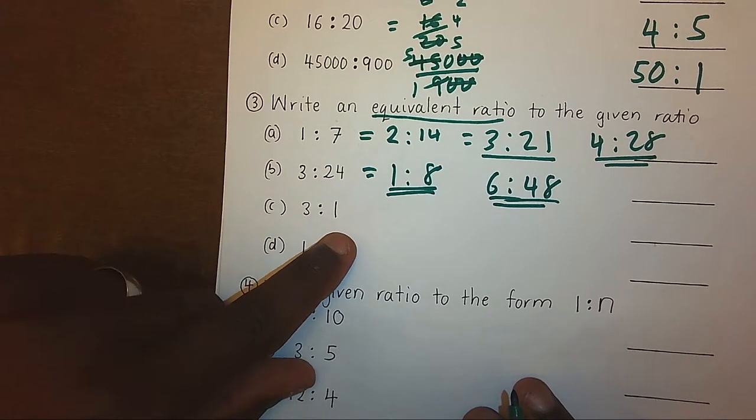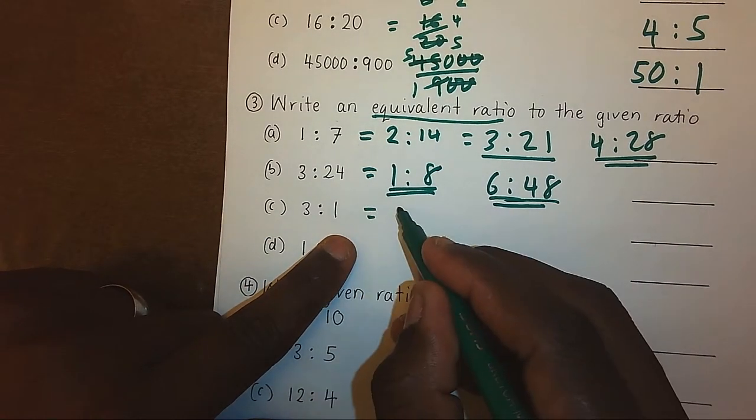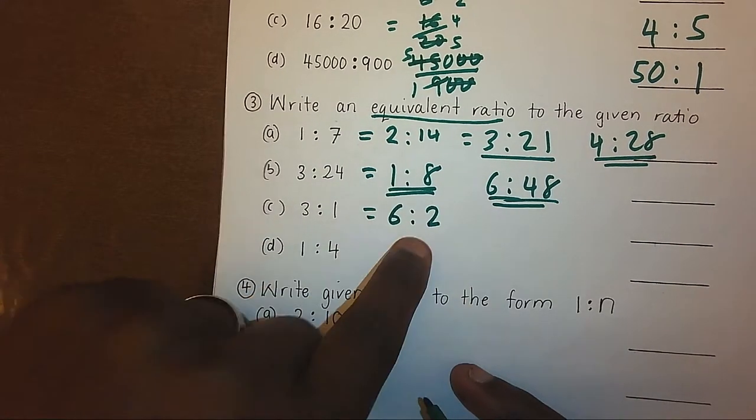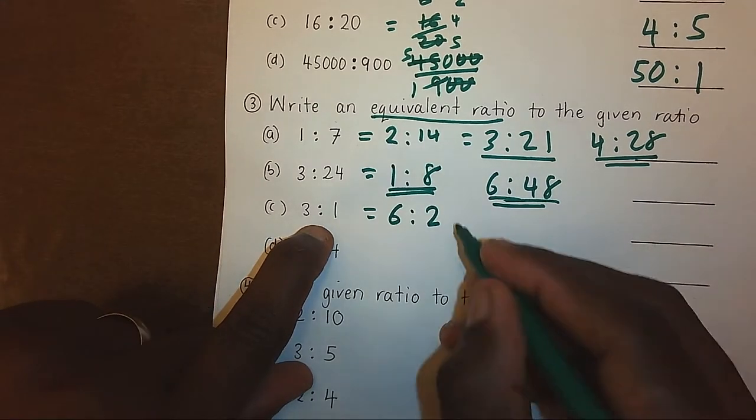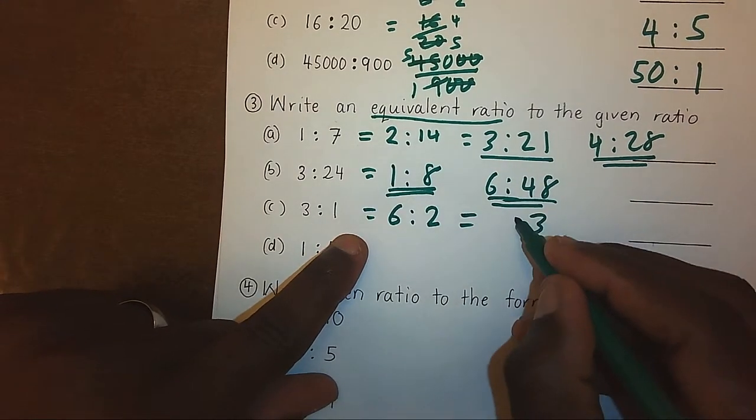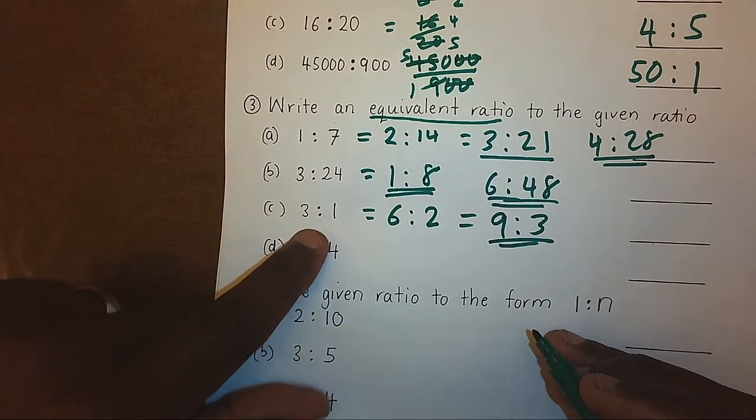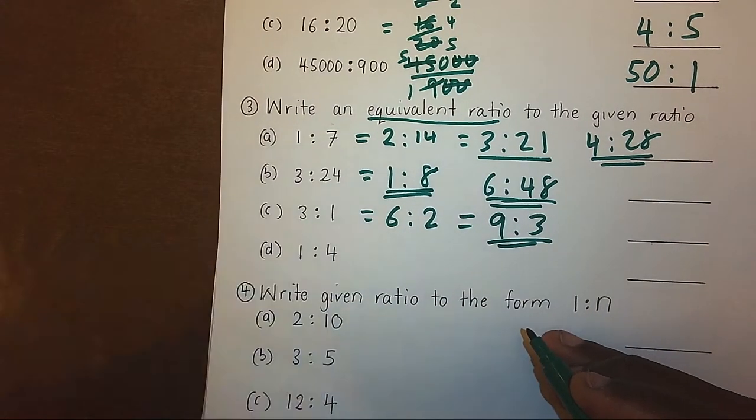3 ratio 1 could be 6 ratio 2. This ratio is equivalent to this one. It could be 9 ratio 3, which is also equivalent. They can continue.